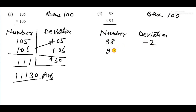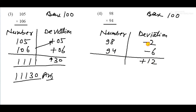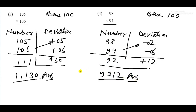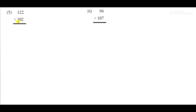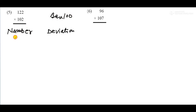Question 4. Base is 100. Number 98, deviation minus 2. Number 94, deviation minus 6. Multiply: 6 times 2 equals 12, positive. Add crosswise: 94 minus 2 equals 92. Answer is 9212.